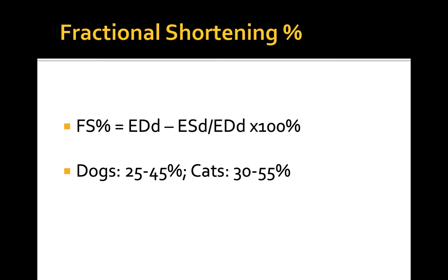I want to reiterate that the eyeball method is more important in diagnosis of causes of undifferentiated shock in an emergency setting. Fractional shortening should be used as an additional tool in cases of equivocal results of the eyeball method. An operator should always remember about this method's limitations and its operator dependency.